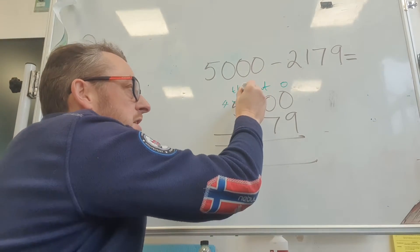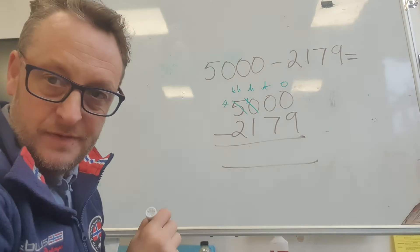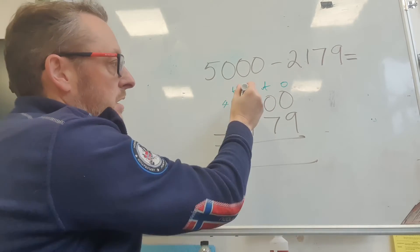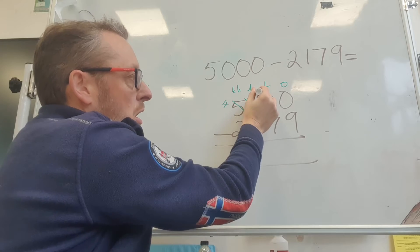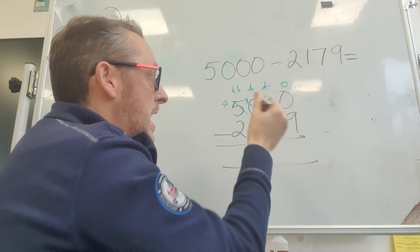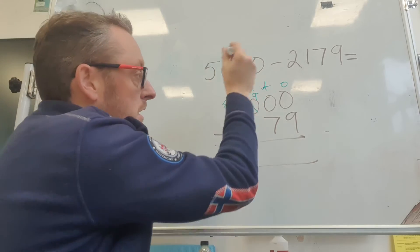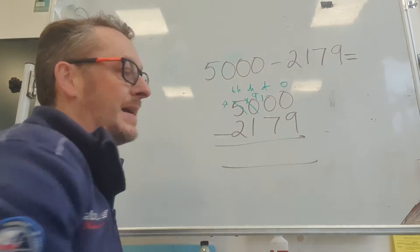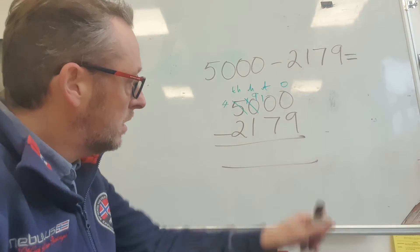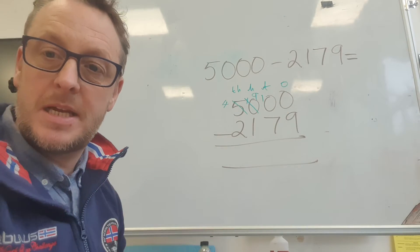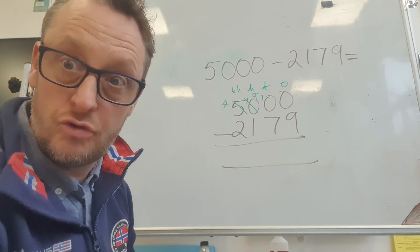I've got to take one of those hundreds off. I did have ten hundreds, now I've got nine. I've got nine hundreds and I'm going to put that hundred into my tens section. So now I've got ten tens. Ten times ten is a hundred.